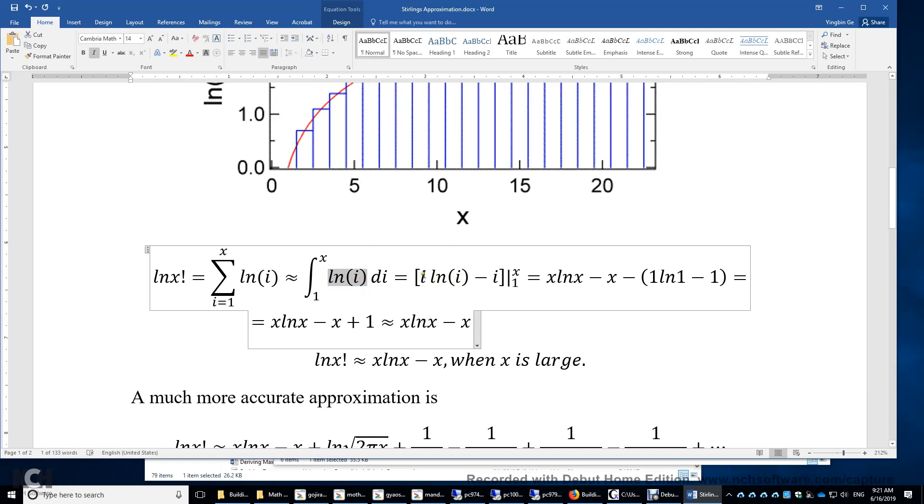You can easily verify this by taking the first derivative of this function. So when you take the first derivative of this function, you have to use the product rule in calculus. The derivative of this part is ln i plus i times 1 over i and then minus 1. So the result is ln i.